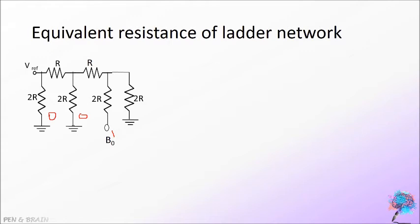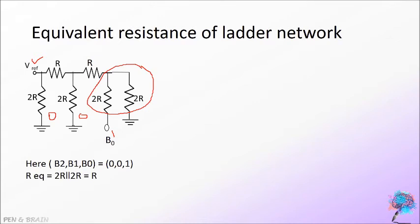To calculate the Thevenin's resistance we have to keep V reference as 0. So, we get the ladder of 2R and 2R here as the parallel connection of resistors. So, the equivalent resistance will be 2R parallel 2R is equal to R.